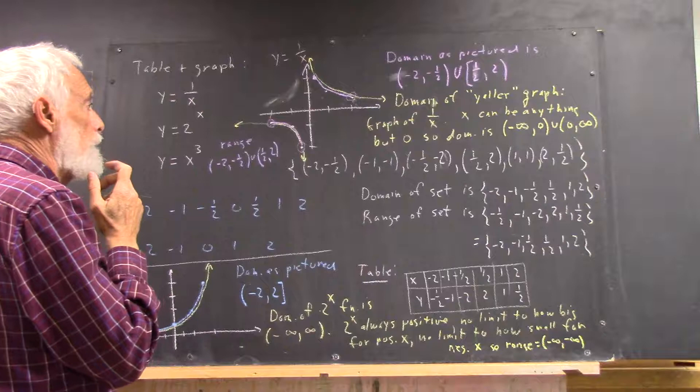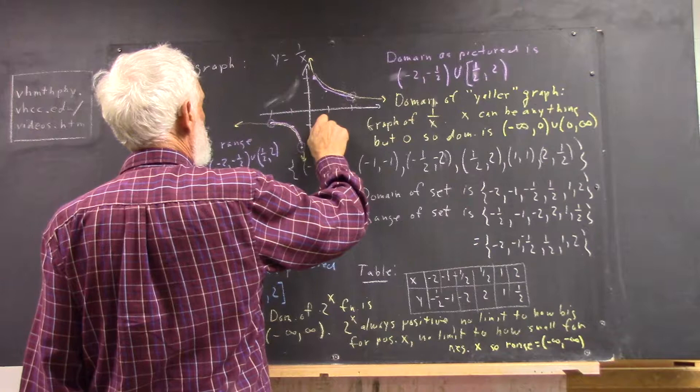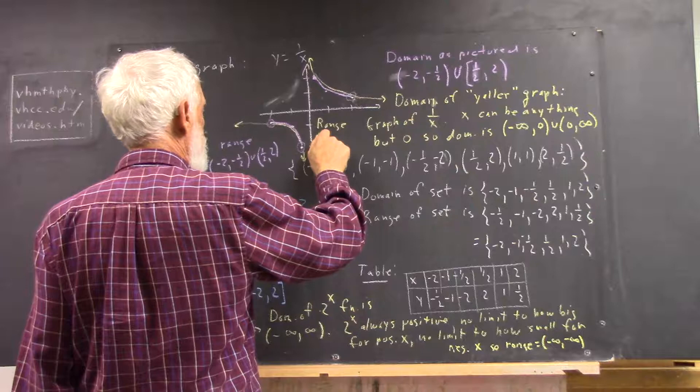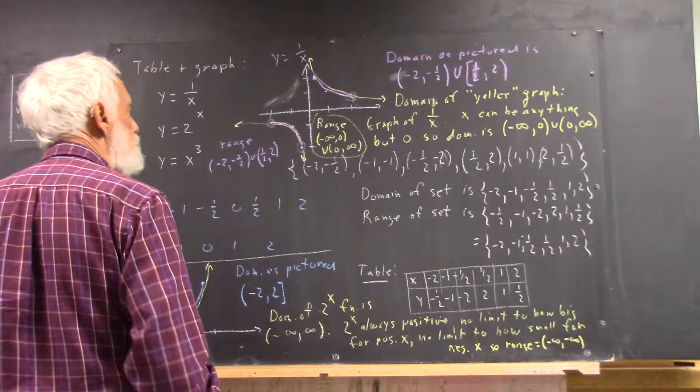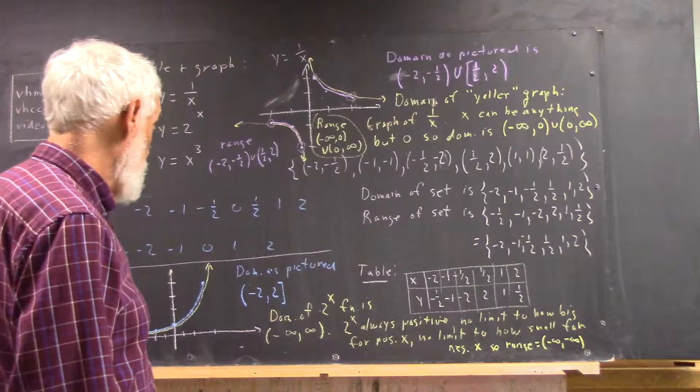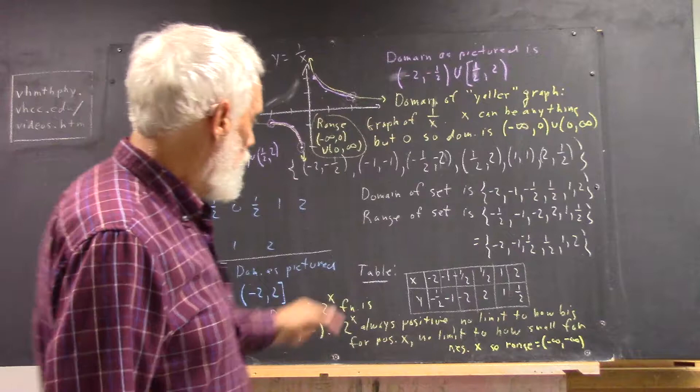So that's the range of the purple graph. The range of the yellow graph turns out to be the same as the domain. Now, that's not going to be the case with the 2 to the x graph.